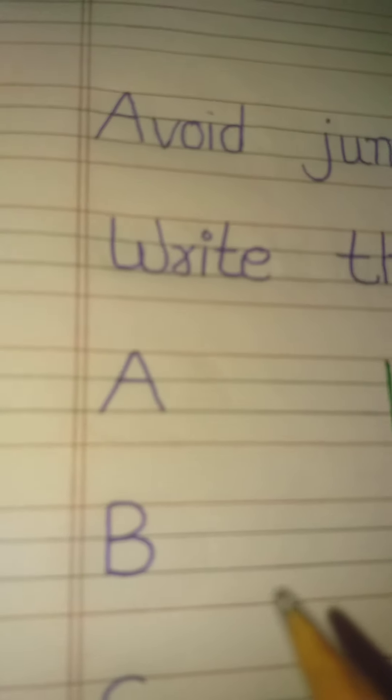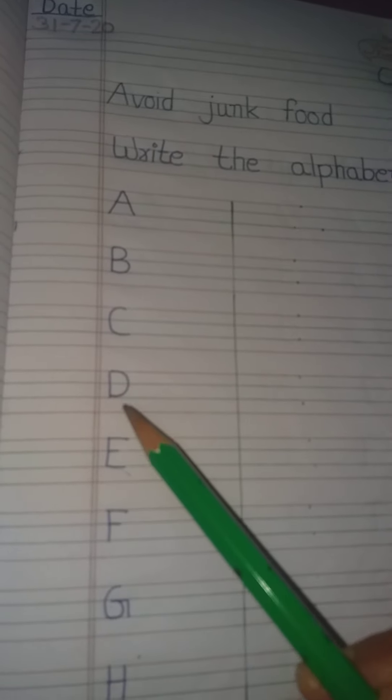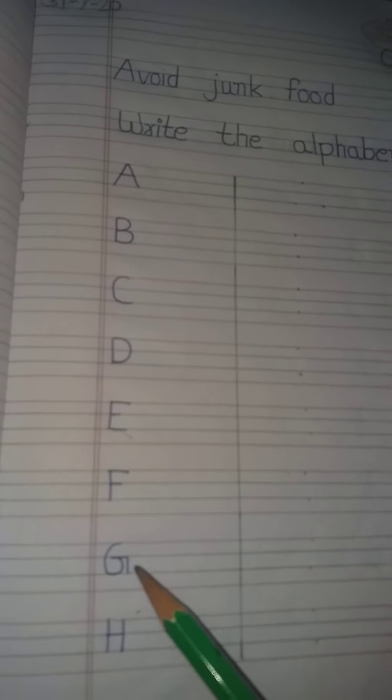Where do you have to write? A, this is A, this is B, this is C, this is D, E, F, G, H.